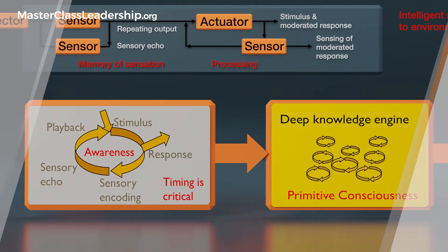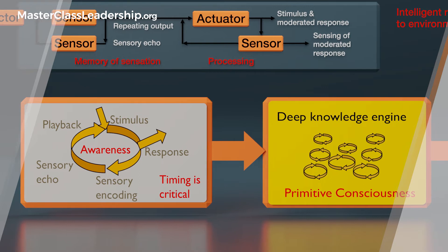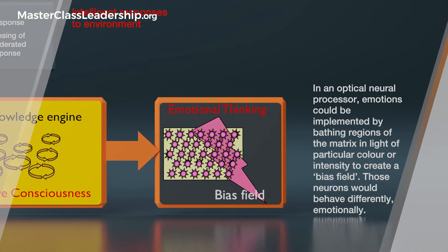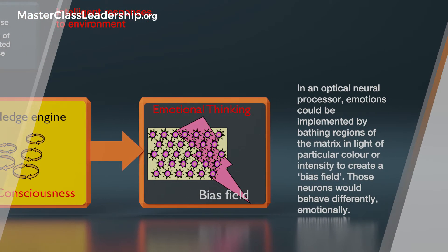If you start going round and round in circles with that, so you have a feedback loop where you hear something and you're repeating that inside your head, you're getting a sensory echo of sensations that you're experiencing and that memory of a sensation is then coupled with a memory of the processing that you're doing, and we're starting to get intelligent responses to the environment which you're starting to become aware of and you have this primitive consciousness.